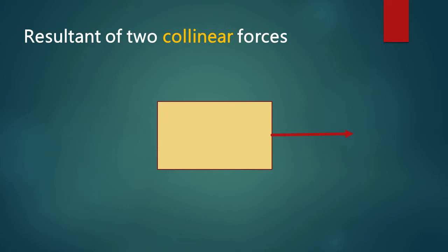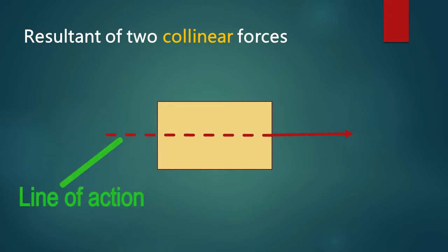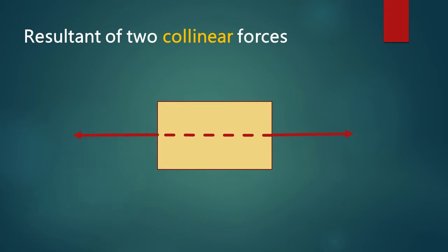Let's look at the resultant of two collinear forces. We can draw a force diagram using a straight line and an arrowhead which indicates the direction of the force. This is the line of action of the force. Another force is applied on the object in the opposite direction with the same line of action. As you can see, the lines of action lie in the same line.